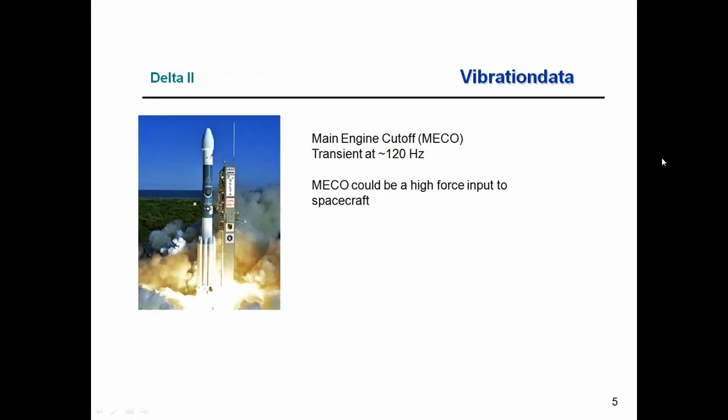The Delta II launch vehicle has a liquid first-stage engine and a MECO event — main engine cutoff — that produces a sinusoidal transient at 120 Hz. This can be a high-force input to the spacecraft, so when coupled loads analyses are performed, this event must be examined, and the payload must be designed and tested accordingly.